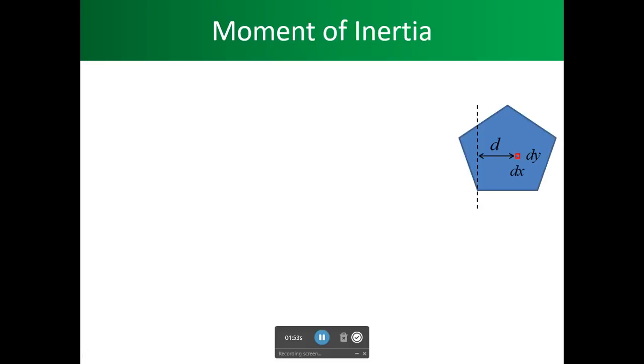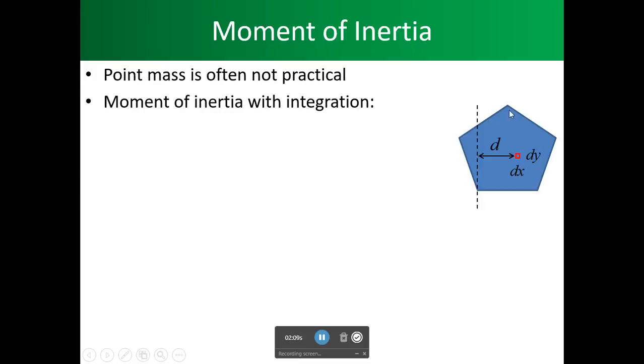Now, we are interested in, notice what we were saying, that distance there is very important. Now, if we look at this as a point mass, it's often not practical because we're dealing with big objects. We're not dealing with a little small point. The moment of inertia, we have to use integration. And so the integration that we'll be using is the moment of inertia times the integral of the distance squared, which we have here, and the D mass.